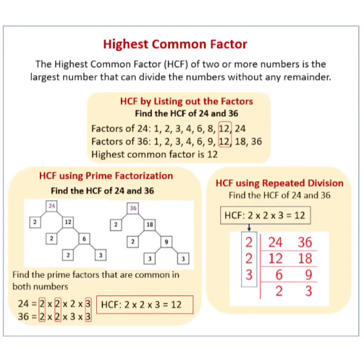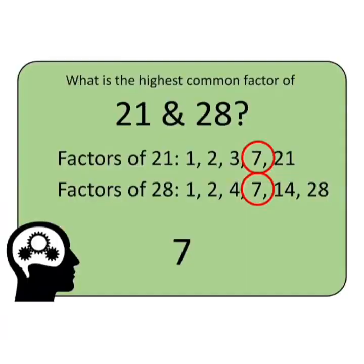Another example: find the HCF of 21 and 28. We find the common factors of 21 and 28, which are 1 and 7. The highest common factor among these is 7. This method of finding HCF by listing out all factors is called the listing method.